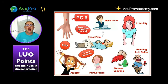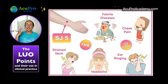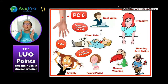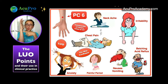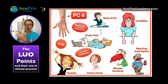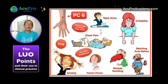PC6 and SJ5 — you've got to love these two. They are the only Luo connecting points that are exactly opposite each other — you could put a needle through PC6 and come out at SJ5 on the back of the wrist. They're very much yin and yang opposites. PC6 is a command point of the chest, while SJ5 follows the Sanjiao meridian up to the shoulder, back, and head.